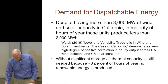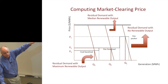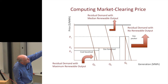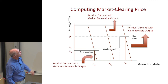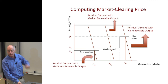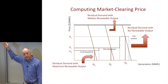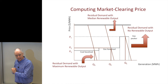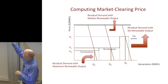When thinking about bidding into the market as a thermal supplier with renewables present, you might face demand with no renewable output, medium renewable output, or maximum renewable output — producing very different market clearing prices from the same thermal supply curve. Price volatility increases significantly, while average prices tend to fall, largely because renewables are pushed into the market through support schemes such as the production tax credit, investment tax credit, or renewables portfolio standards.